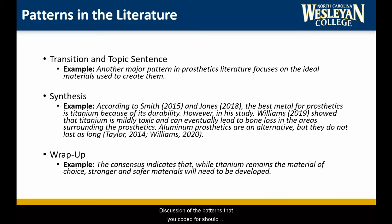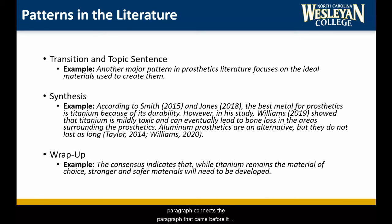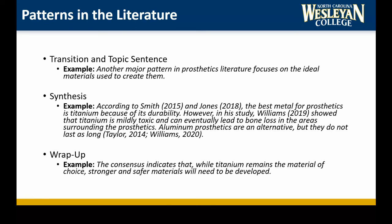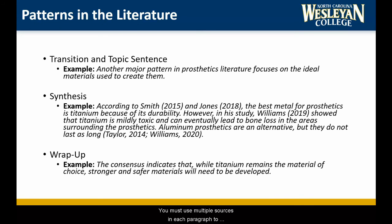Discussion of the patterns that you coded for should make up the body of the literature review. Each paragraph should include a transition, a topic sentence, a synthesis of the conversations in the literature, and a wrap-up. A transition shows your reader how the new paragraph connects to the paragraph that came before it and smooths the flow from one idea to the other. The transition may be its own sentence or a part of the topic sentence. The topic sentence identifies the pattern being discussed in the paragraph, and all evidence and examples should link directly back to it. The purpose of a literature review is to synthesize, not summarize. To synthesize, you must reveal how the existing literature forms a conversation about the topic. Avoid talking about sources individually as a list; instead, show the agreements and disagreements between sources and explain why those agreements and disagreements exist. You must use multiple sources in each paragraph to create a conversation. The wrap-up brings the paragraph to a close — briefly remind the reader of the original pattern demonstrated in the paragraph.